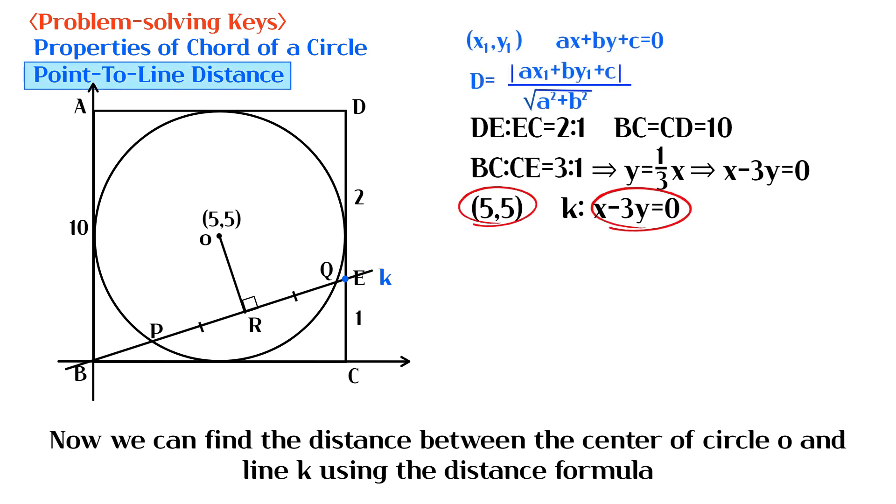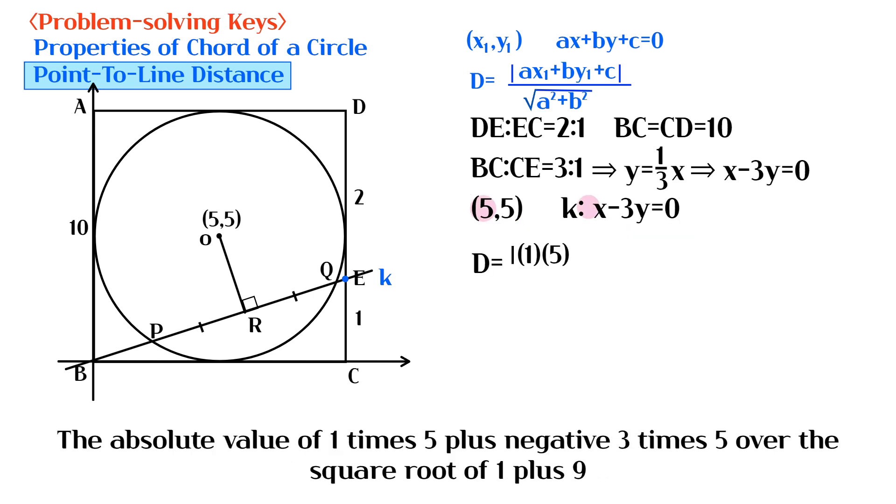Now we can find the distance between the center of circle O and line K using the distance formula: the absolute value of 1 times 5 plus negative 3 times 5 over the square root of 1 plus 9.